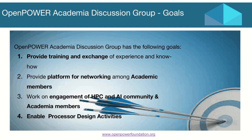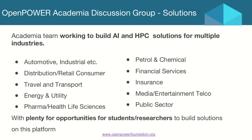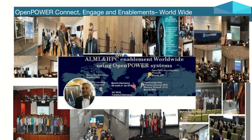Over five-plus years, we have done more than 100 meetups, workshops, and webinars, extending the ecosystem to a newer level. Many students, faculties, and researchers collaborate and participate in our workshops. Currently there are 100 plus universities worldwide as part of this academia group. We focus on industries like AI and HPC, where we have proof of concepts, solutions, and performance metrics completed.